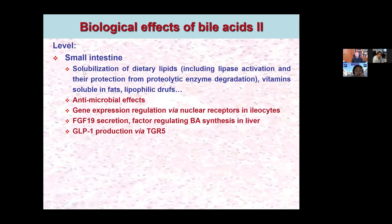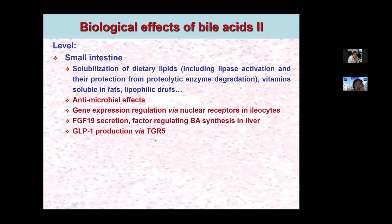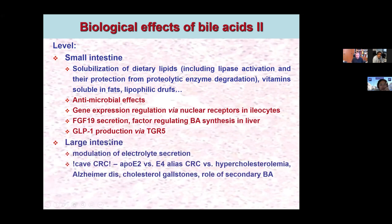At the level of the small intestine, bile acids are responsible for solubilization of dietary lipids including lipase activation and protection from proteolytic enzyme degradation. They also solubilize fat-soluble vitamins and lipophilic drugs. They have antimicrobial effects, regulate gene expression in enterocytes, and are responsible for fibroblast growth factor 19 (FGF19) secretion by enterocytes — a factor regulating bile acid synthesis in the liver. They are also responsible for GLP-1 production via the TGR5 cytoplasmic receptor.